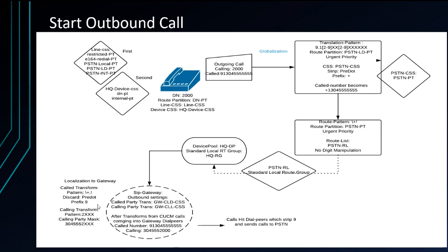We globalize within the system, then we localize to get back out to the gateway — removing that plus and putting the nine back on it. When the call actually goes to the physical gateway, there's a dial peer in there that has a nine-whatever to match, and that can get out through whatever medium you have on that gateway — a SIP trunk, a PRI, a regular POTS line, whatever it may be. This is there for numerous reasons: to avoid overlapping dial plans, to help avoid problems, and definitely for SRST, so you can have your nine dialing all the way through.